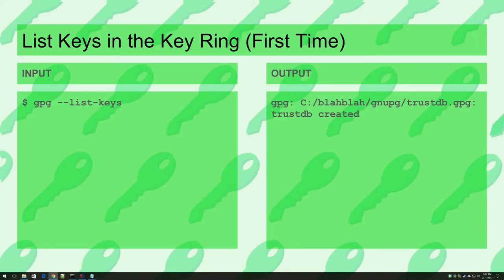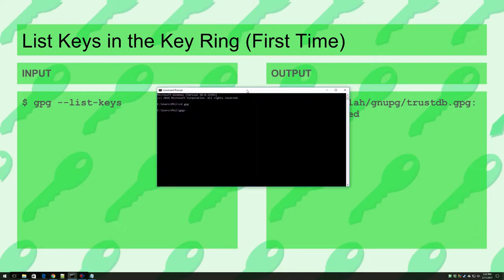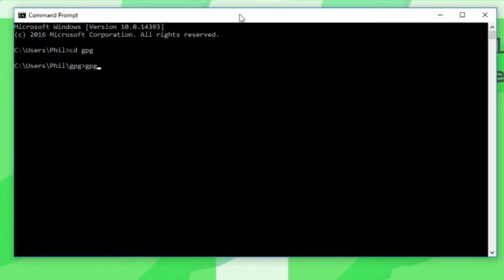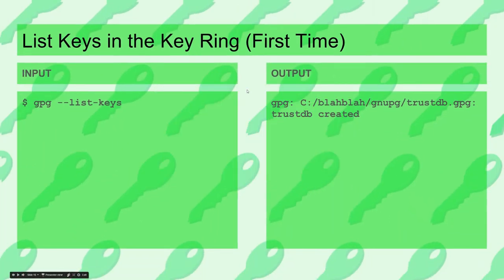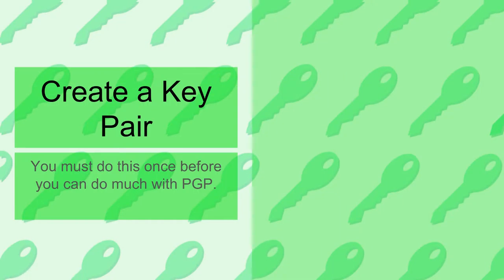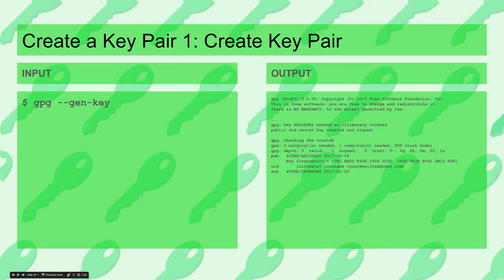And list keys — this is something you'll do constantly while performing other operations, so it's prudent to start here. From the command line, you can enter the input shown on the left and get the output seen on the right. I've been manipulating the key ring for this presentation so mine is a bit different. Yours will indicate that it created a trust database, because this is your first time using it. If I enter that command, it shows me nothing, because there are no keys in there yet.